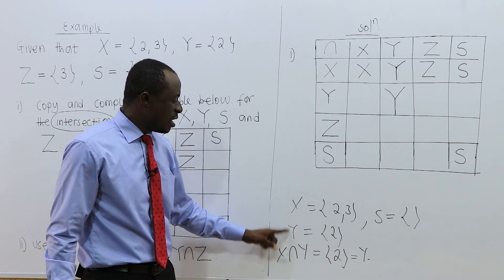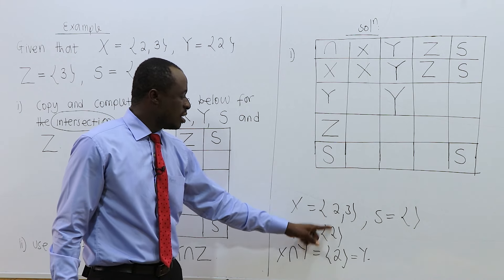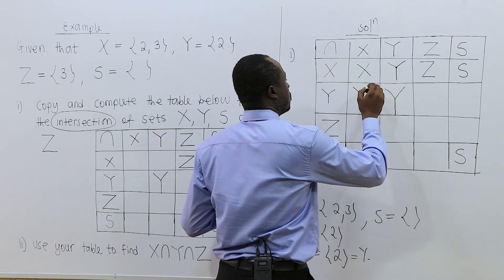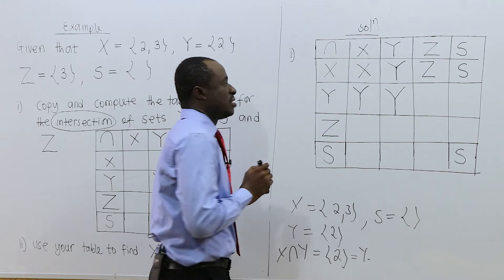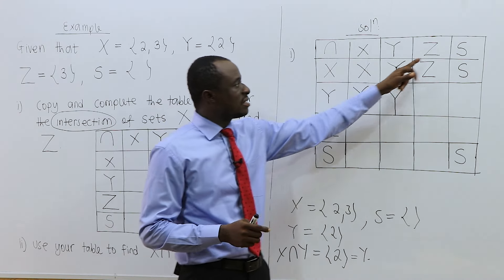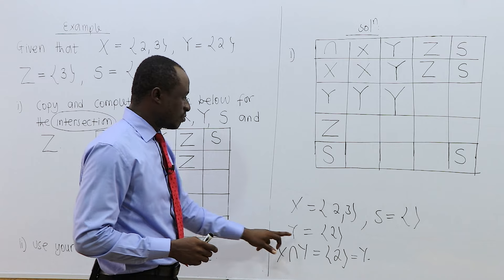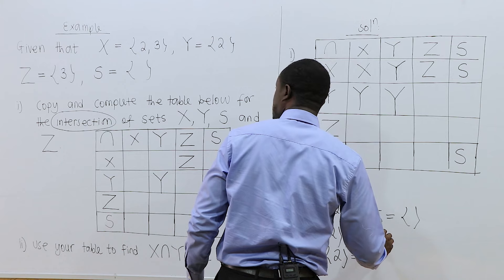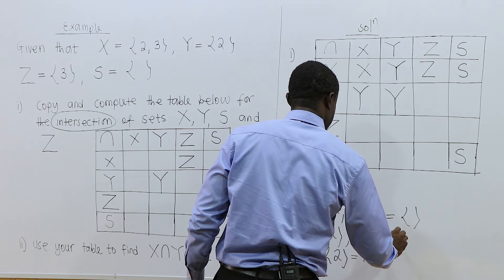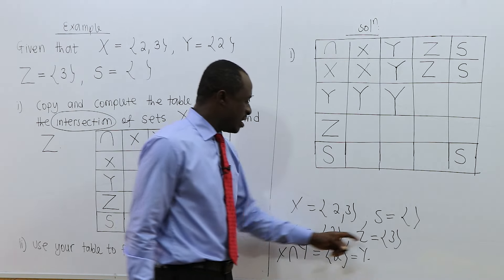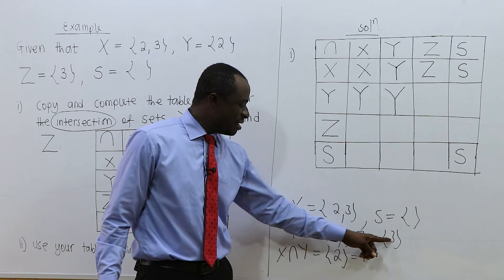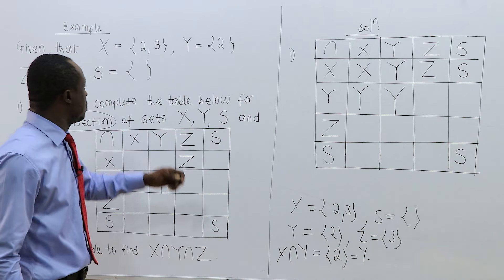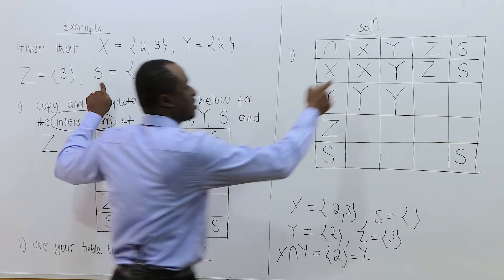Now, Y intersection X — the element common to Y and X is 2, and 2 is the same as Y. Now, Y intersection Z — Y is {2} and Z is {3}. Do you have any common element? No common element, which gives the empty set.